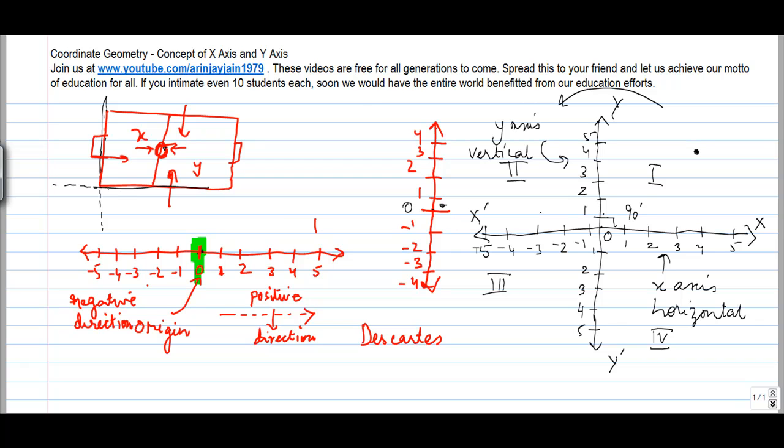These four parts which are divided are called quadrants. Quadrant one, quadrant two, quadrant three, quadrant four.